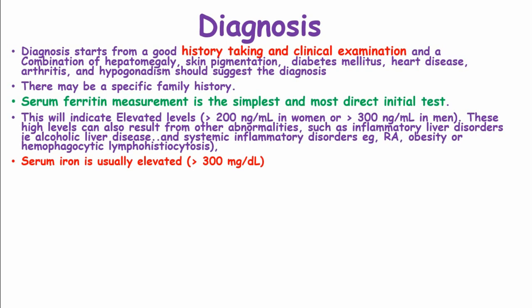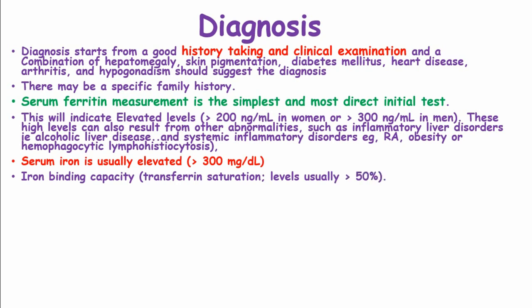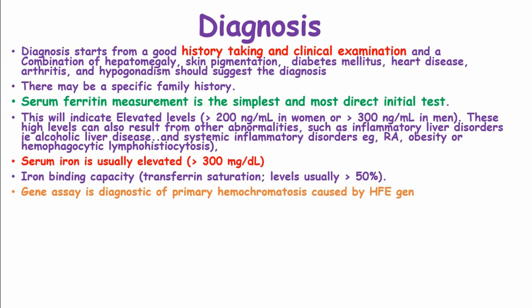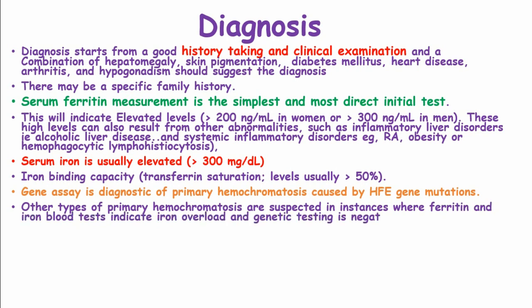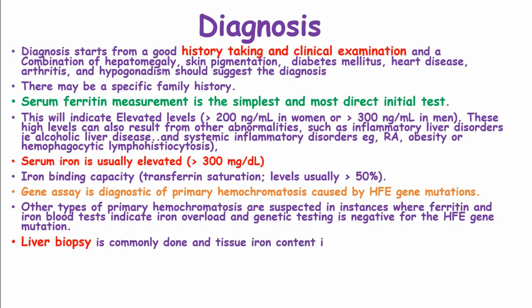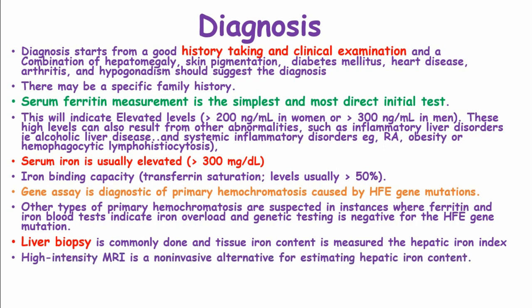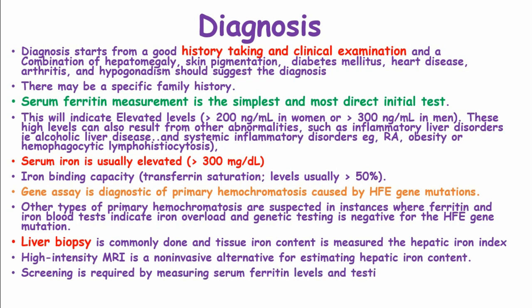Serum iron is usually elevated at more than 300 mg/dL and transferrin saturation levels are usually more than 50%. Gene assay is diagnostic of primary hemochromatosis caused by HFE gene mutations. Other types of primary hemochromatosis are suspected when ferritin and iron indicate overload but genetic testing is negative for the HFE gene mutation. Liver biopsy is common and is done together with hepatic iron index. High-intensity MRI is a non-invasive alternative for estimating hepatic iron content. Screening requires measuring serum ferritin levels in first-degree relatives and testing for the C282Y/H63D gene mutations.